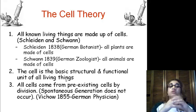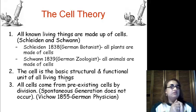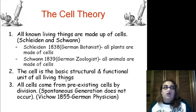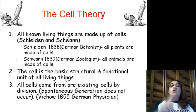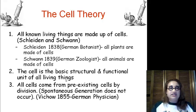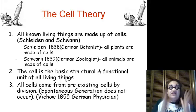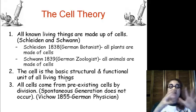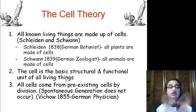All of these people came together and created what is known as the Cell Theory. Number one: all living things are made up of cells. This was done by two German scientists — Schleiden, in 1838, a German botanist, said all plants are made of cells. Then Schwann, a German zoologist, said all animals are made of cells. Combined: all living things are made of cells. Number two: the cell is the basic structure and functional unit of life — it is the smallest thing that is living. Number three: all cells come from pre-existing cells, from Virchow. Spontaneous generation was disproven. Living cells come from living cells.